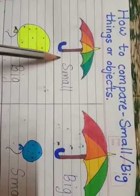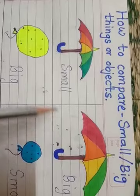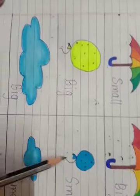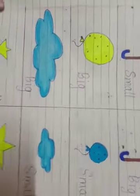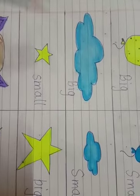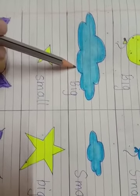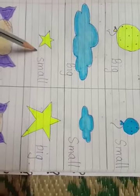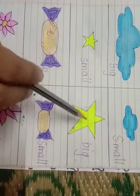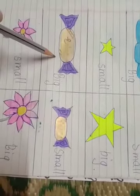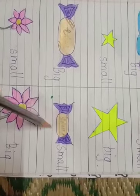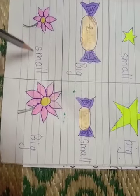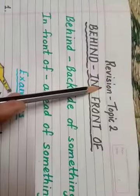Small umbrella, big umbrella. Big balloon, small balloon. Big cloud, small cloud. Small star, big star. Big chocolate, small chocolate. Small flower, big flower. Small ball, big ball.